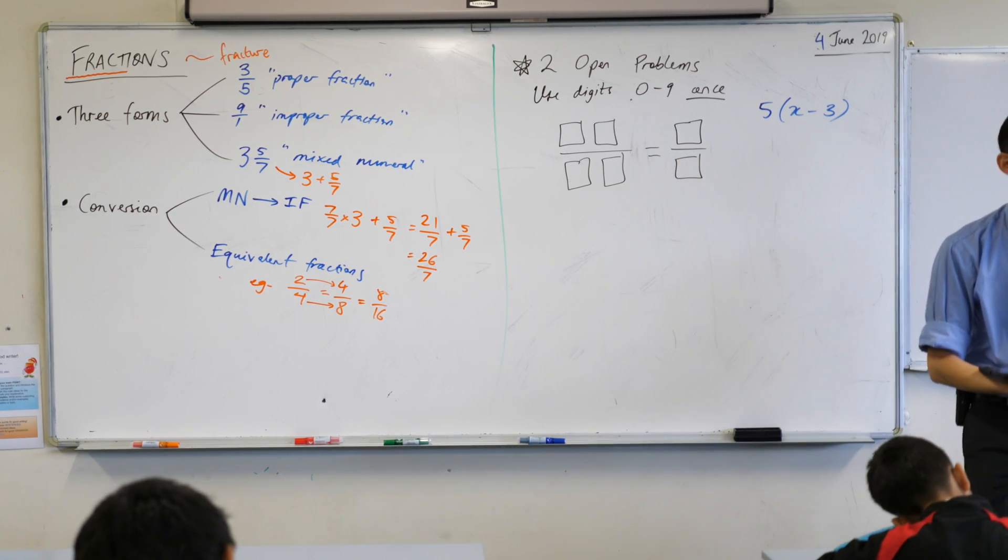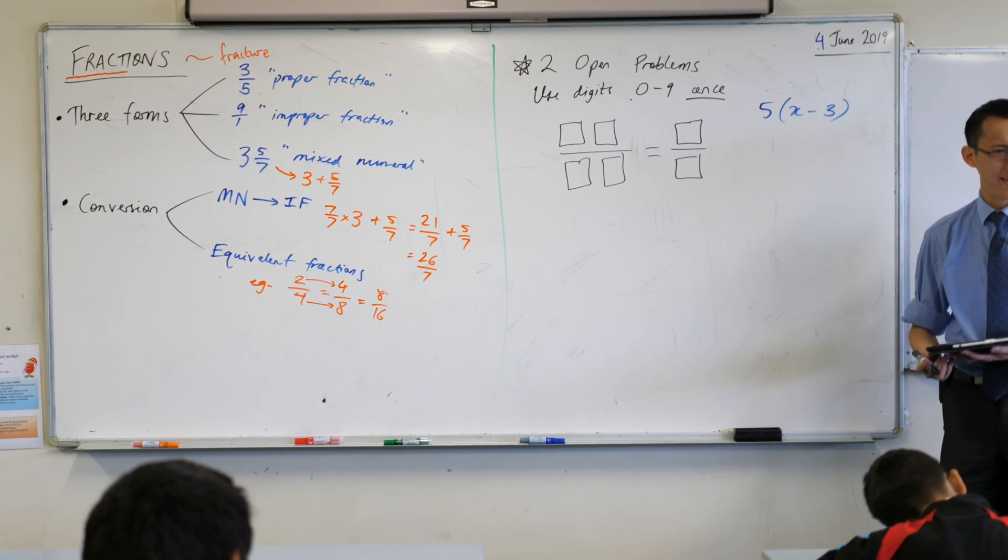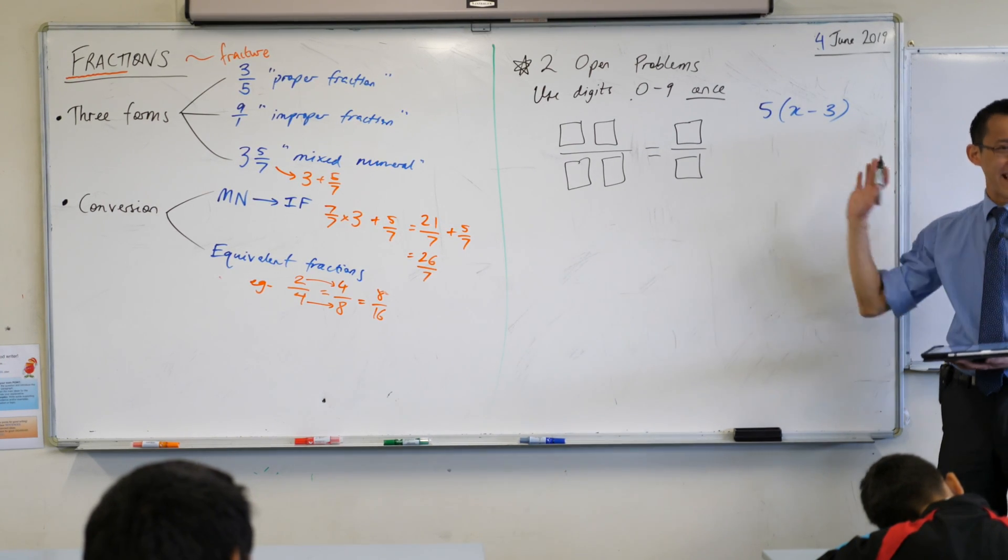So I've got a fraction over here, which is two digits on the top and two digits on the bottom, and I want an equivalent fraction that is just one digit on the top and one digit on the bottom. So that's my first open problem. It's open because there are many solutions to this. I have a handful here, but I'm not going to tell you how many, because last time I told you how many, you guys completely destroyed me. So that's the first one.